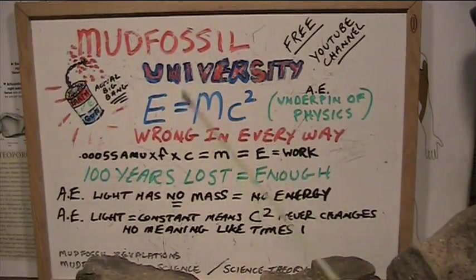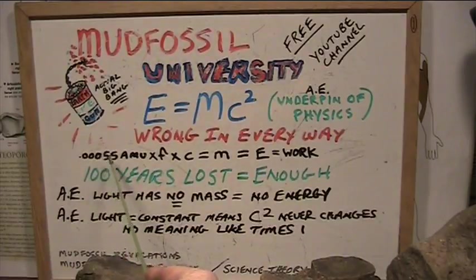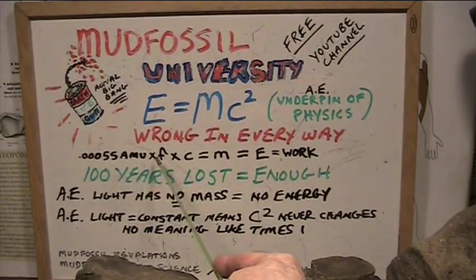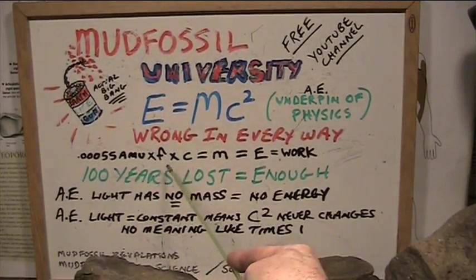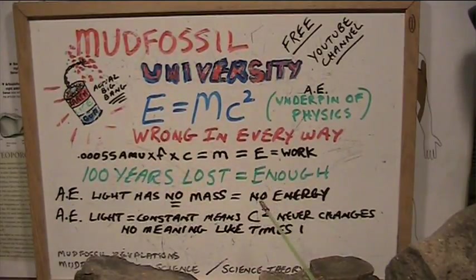What E equals mc squared really is, energy, is an electron which weighs 0.0005 atomic mass units is what they say, and then you take that electron, you spin it so the frequency is multiplied times the electron, and then you take the speed of light into consideration, which is variable, we know that for a fact.